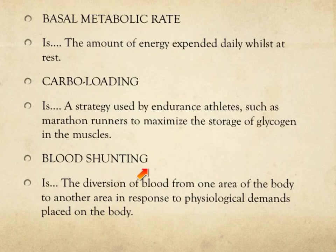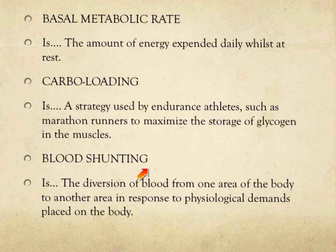Lastly, we have blood shunting. This is the diversion of blood from one area of the body to another area in response to the physiological demands placed on the body. When we start exercising, the working muscles require more oxygen so they can work harder and for longer. However, there are other areas of the body, like the stomach, that do not require this blood as much. So therefore it is redirected away from the stomach to the working muscles so that they have the oxygen required to work for long periods without getting tired.